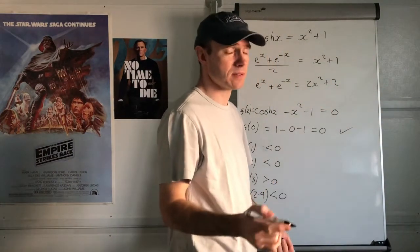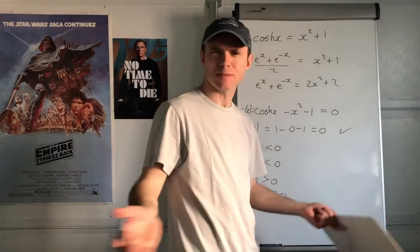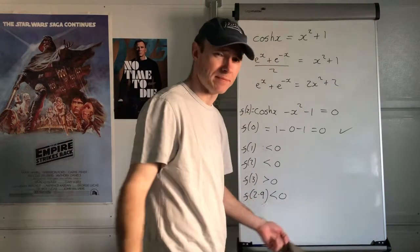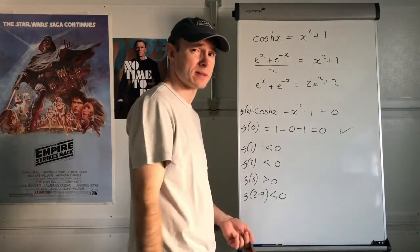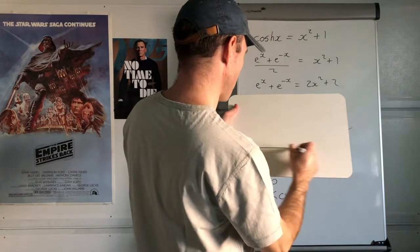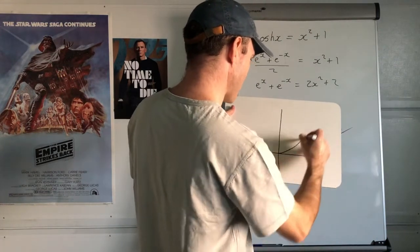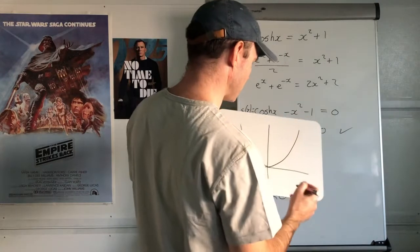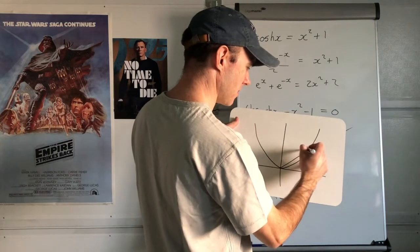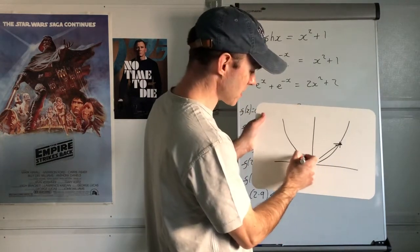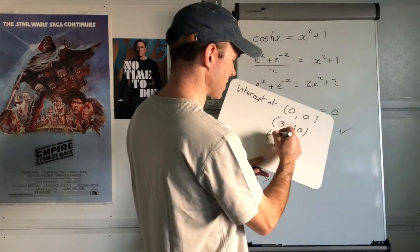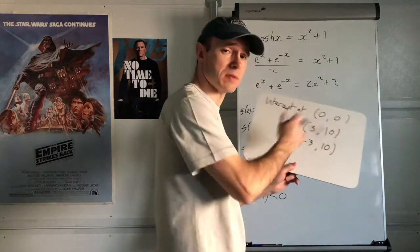I'm going to predict that there's one more intersection point — pause the video: why do I predict that? Symmetry of the graph — they're both symmetrical about the y-axis. So if there's one intersection point there, because of the symmetry of the curve, there's going to be another at negative 3, 10.